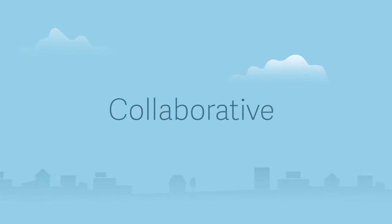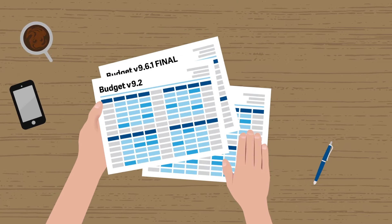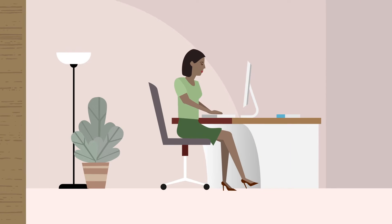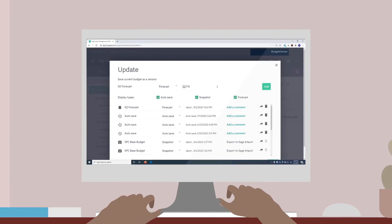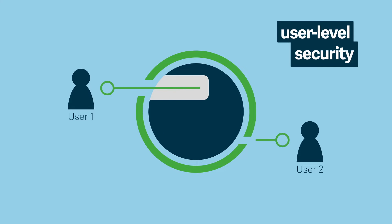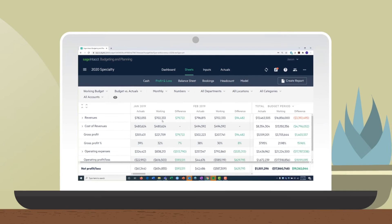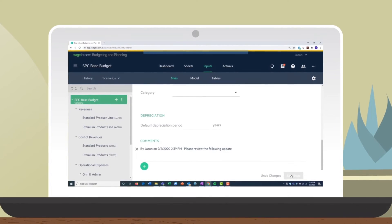Sage Intacct Planning creates a single collaborative source of information. Rather than chasing and consolidating the current version of the budget from multiple spreadsheets, budget owners can simply log in, see actuals or results, and update their budgets as they evolve. User-level security ensures they only have access to the areas they manage. Finance can then instantly review, ask questions, and incorporate that new data into the broader financial plan.